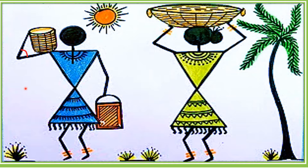It's your observation skills. Here, if you observe near the hand and the basket, you can find an angle. This is more than 0 degrees and less than 90 degrees. So what kind of angle is it? It's an acute angle — more than 0 degrees and less than 90 degrees.